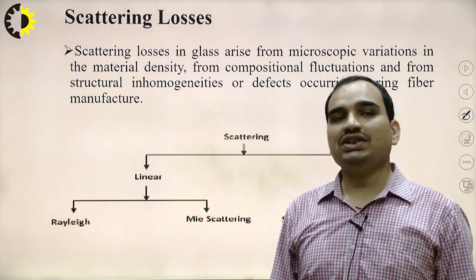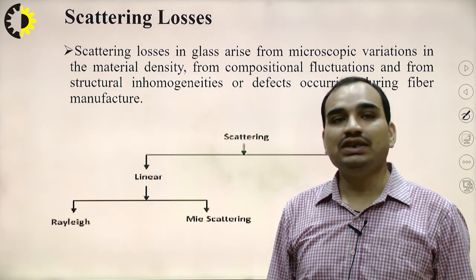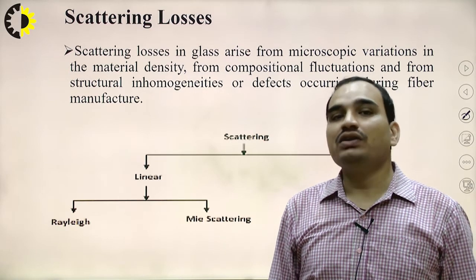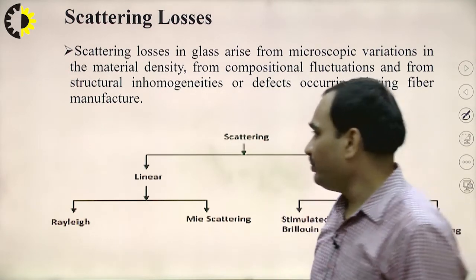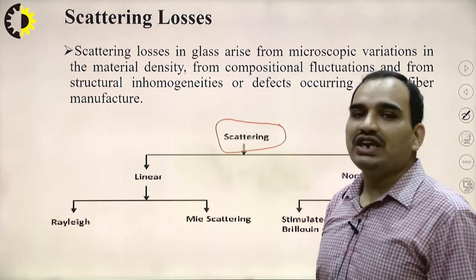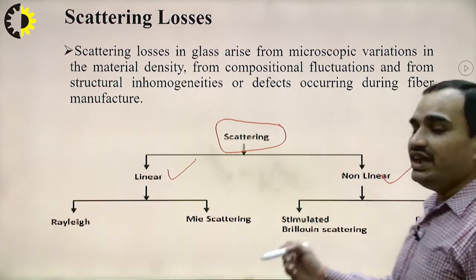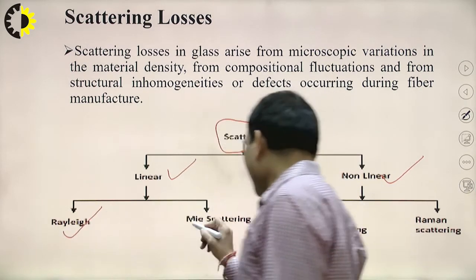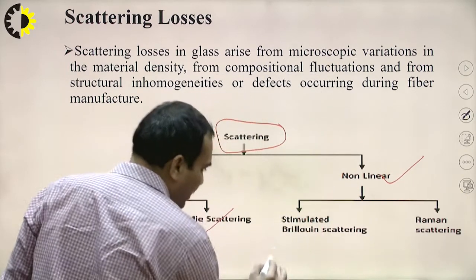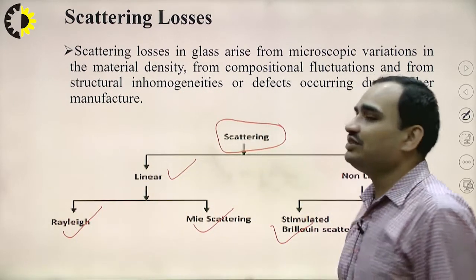Scattering loss in glass arises from the microscopic variations in the material density, from the compositional fluctuations, and from the structural inhomogeneities or defects occurring due to the fiber manufacturing. Scattering loss can be classified as linear loss and nonlinear loss. These are the classifications.